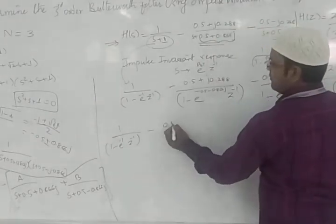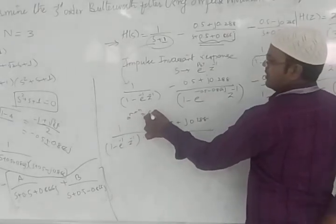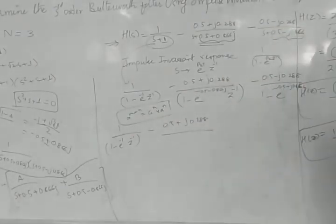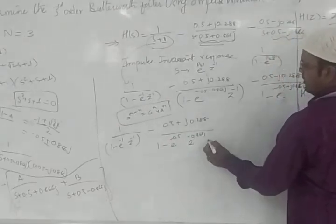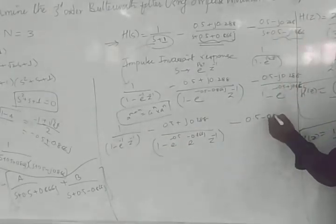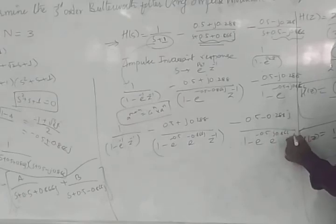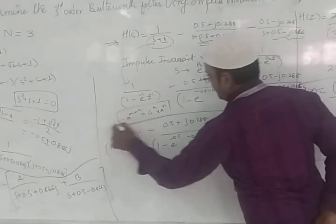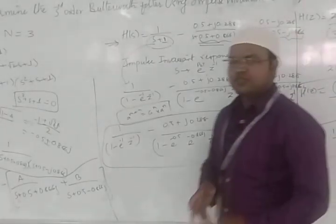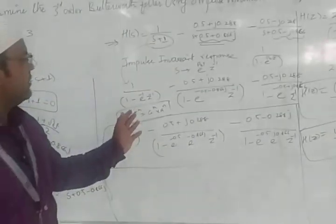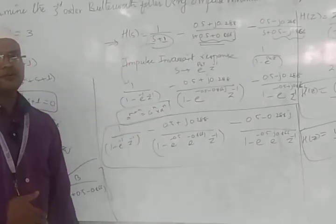This is the complete H(z) for the third-order Butterworth filter using impulse invariant response. You can substitute the value of e⁻⁰·⁵ for the real parts while keeping the imaginary parts. This is how we solve the given problem using the impulse invariant response for a third-order Butterworth filter. Try these kinds of questions and keep practicing.